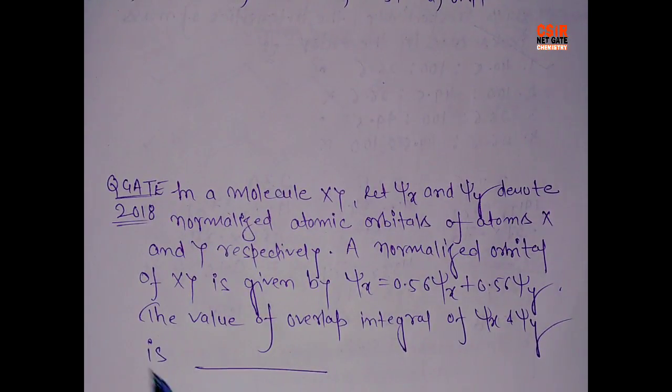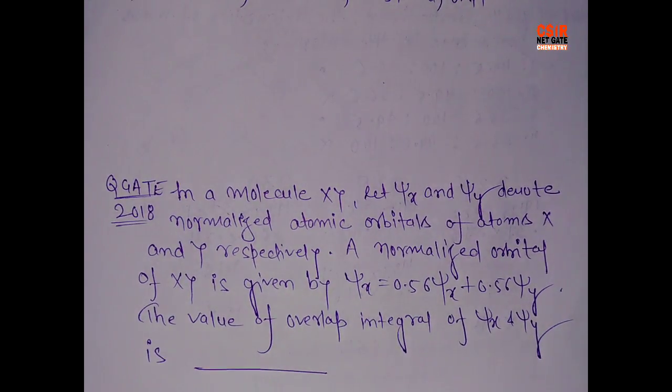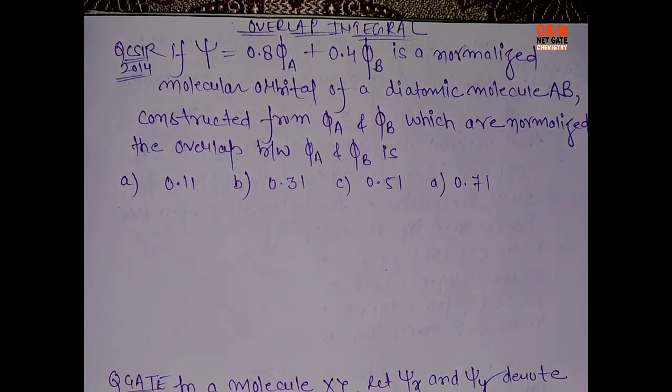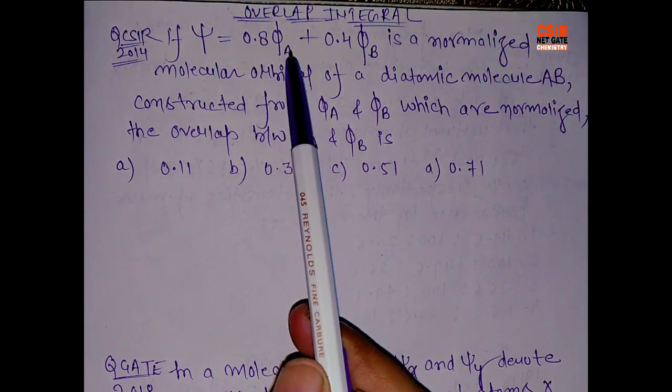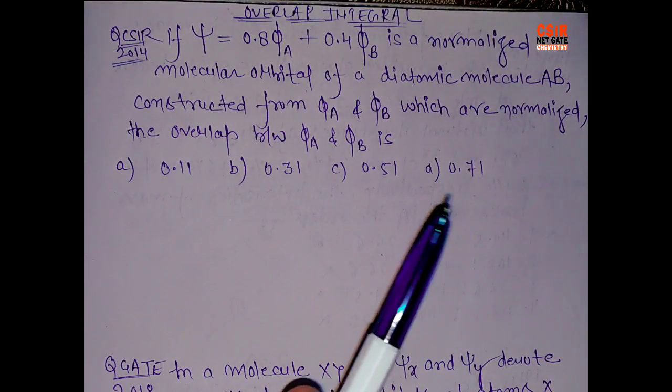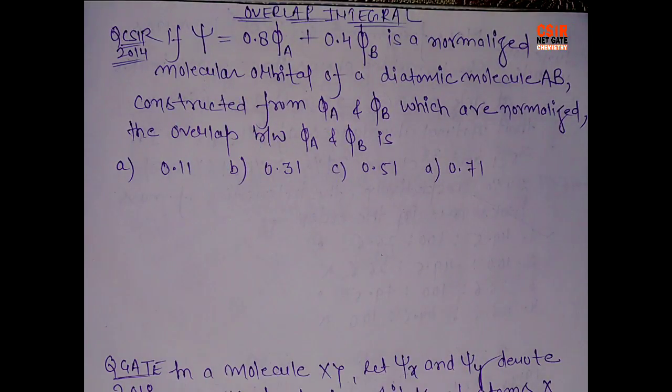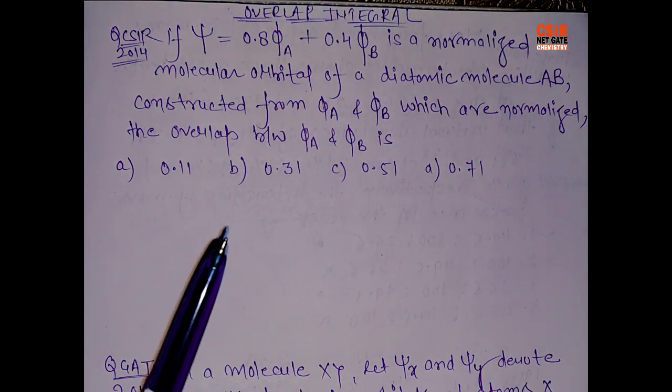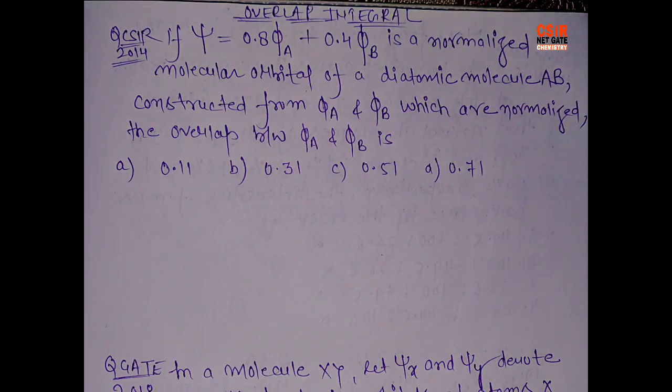So let's start with the problem. Basically, you will have two wave functions psi a and psi b, and a combined wave function of both of them. So what you have to do is basically we have a simple formula by which we can calculate the overlap integral.